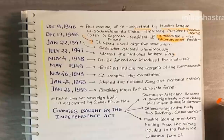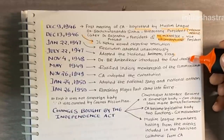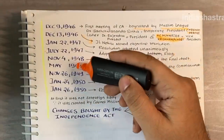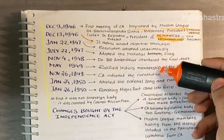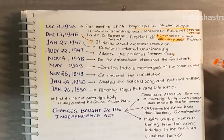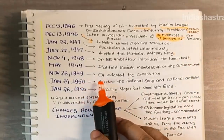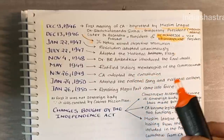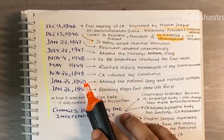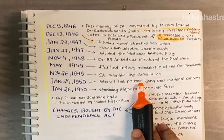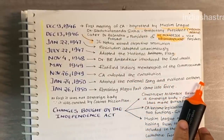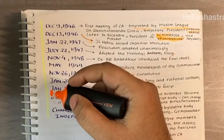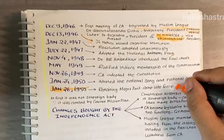On November 4, 1948, Dr. B.R. Ambedkar introduced the final draft of the constitution. In May 1949, the constituent assembly ratified India's membership of the Commonwealth. On November 26, 1949, the constituent assembly adopted the constitution. On January 24, 1950, the constituent assembly adopted the national song and national anthem. Two days later, on January 26, 1950, the constitution as a whole came into force.